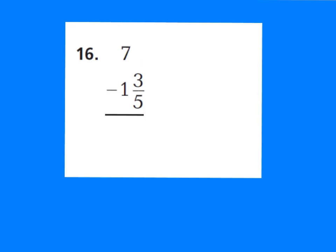If you did this correctly, you should have said: I need to take away a whole from 7 and make it 6 wholes. And I'm going to create a whole and call it 5 fifths. 5 fifths minus 3 fifths is 2 fifths. 6 wholes minus 1 whole is 5 wholes. It is already simplified because 2 and 5 only have the common factor of 1.